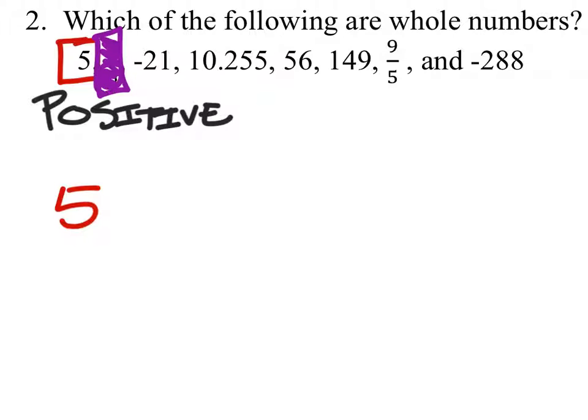The third value, negative 21, is negative, so it's not included either. 10.255 has a decimal with some other value than zero, so this one also is not included.